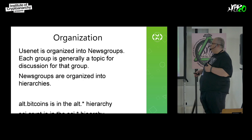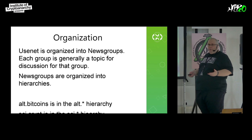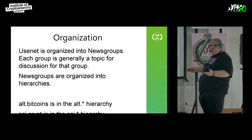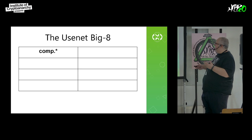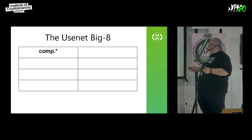Usenet is divided into what are called newsgroups. Each group is generally a topic for discussion for that group. Newsgroups are organized into hierarchies. For example, alt.bitcoin is in the alt hierarchy, and comp.sci is in the comp hierarchy. These are the Big Eight newsgroups — the descendants of the original newsgroups.